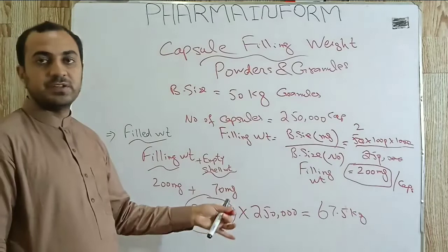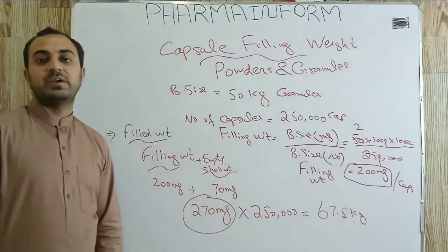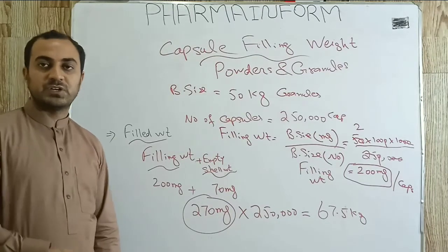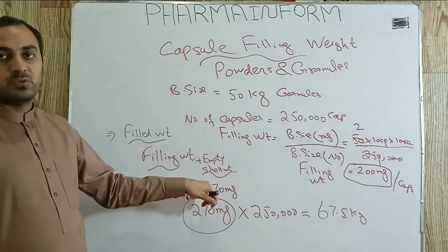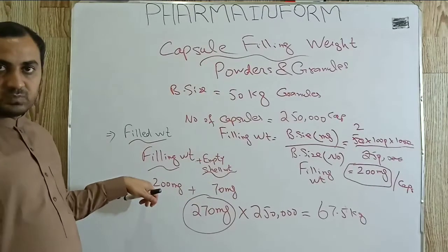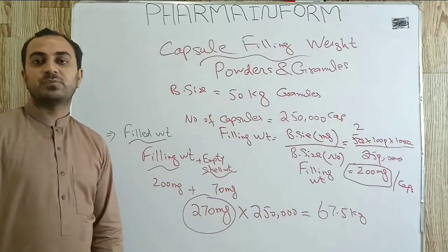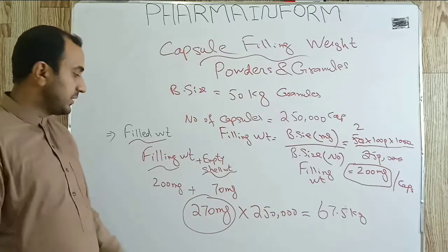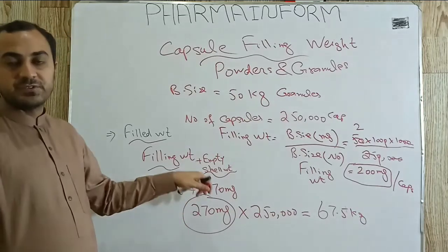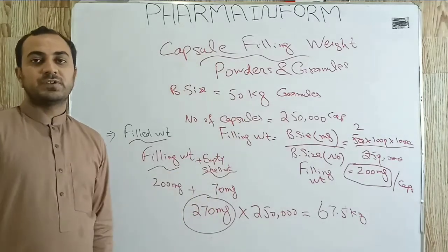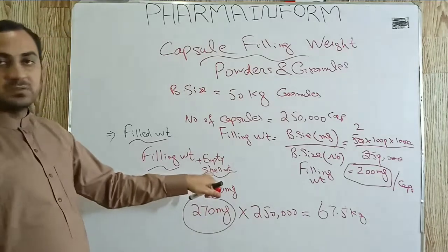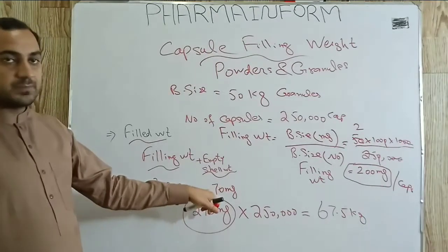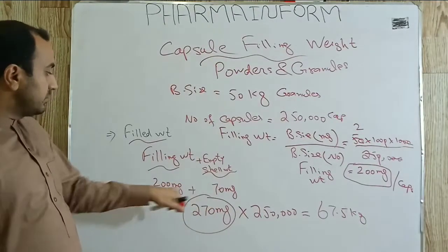Suppose we have a shell whose empty shell weight is 70 mg. We determine empty shell weight by taking the average of 50 or 100 capsule shells, and we select the capsule according to our filling weight. We have different sizes of capsules ranging from triple zero, double zero, one, two, three, four, five. Triple zero is the largest shell number and five number shell is the smallest. Suppose we are using shell number one.